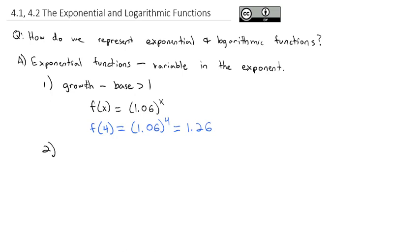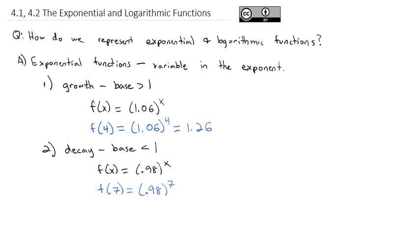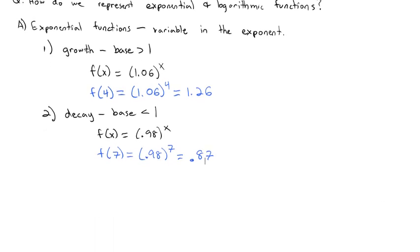The second type is exponential decay, which is when the base is less than 1. For example, f(x) = 0.98^x — because that base is less than 1, it's going to get smaller and smaller with time. So f(7) = 0.98^7, which shrinks down to 0.87. So we have exponential growth and exponential decay.